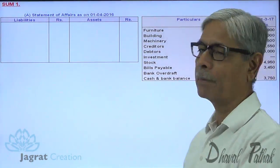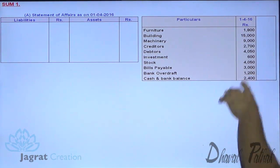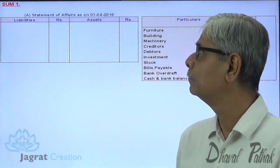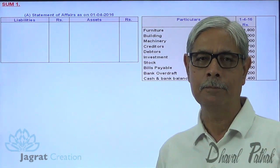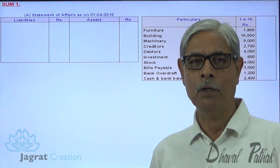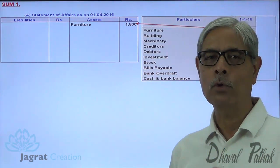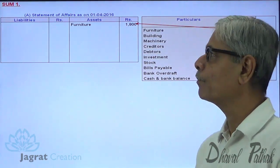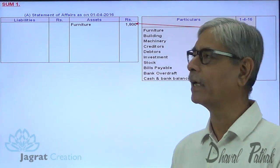Here I prepare the statement of affairs at the beginning of the accounting period. This is the information I am going to consider for preparing this statement of affairs, which I like to call a balance sheet. These are the assets and these are the liabilities. Total of assets minus total of liabilities — I will find out the capital. Assets are items under ownership and their value. From that I will deduct the owings, that is liabilities, to find out the capital.